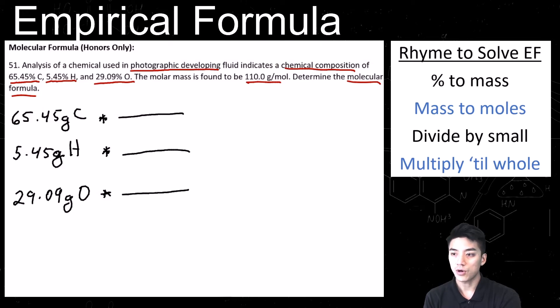And now the second part of the rhyme is mass to moles. So one mole of carbon over 12 grams of carbon. That's the molar mass which you can find on the periodic table. We'll crunch the numbers later. So one mole of hydrogen over one gram of hydrogen. And one mole of oxygen is equal to 16 grams of oxygen. So we need a calculator for this. We're going to cancel out these units and crunch these numbers.